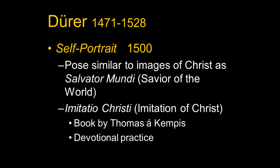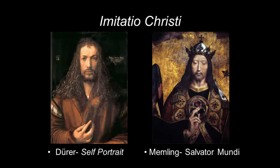The Imitatio Christi is certainly a book you can find in translation quite easily, and it becomes part of devotional practice. You are supposed to imagine that you are there, not imagining you are Christ, but trying to behave like Christ with his virtues — the acts of mercy, for example. The first time I saw this painting in Munich, my first glance at it I thought it was a picture of Christ. Then I did my double take: oh, that's Albert Dürer.